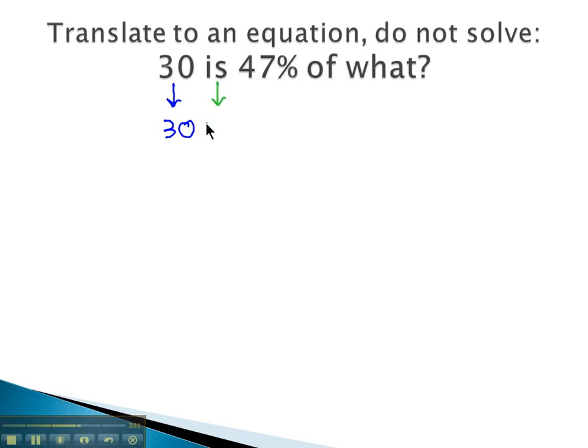Is, we know, translates into an equal sign. Forty-seven, that's already a number. Percent, percent as a decimal is 0.01. Of, of is your multiplication. And finally, what? What is our variable.